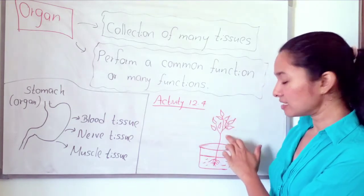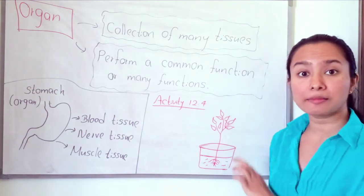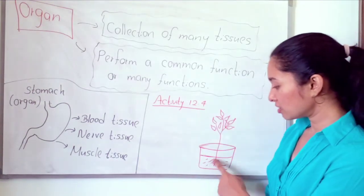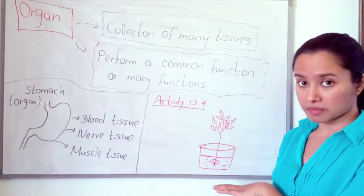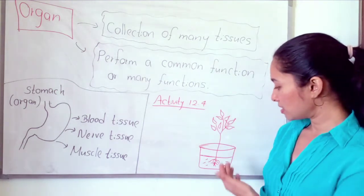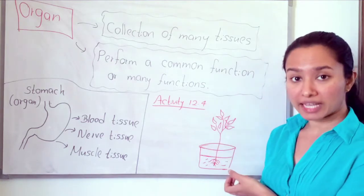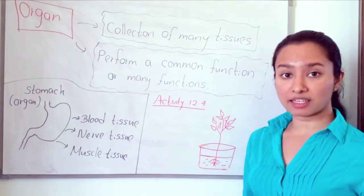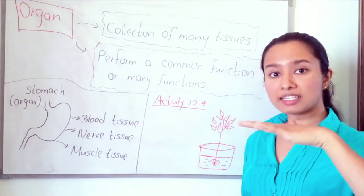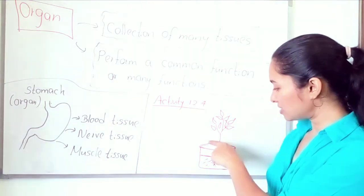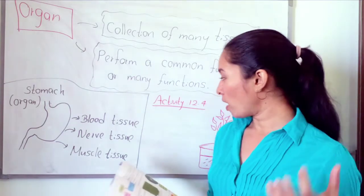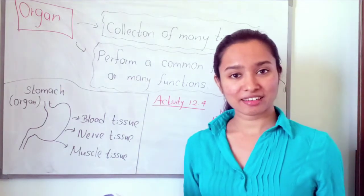Submerge a balsam plant — balsam means 'kudelu peria' — with the roots submerged in the water. After some time, the stem will turn red in color. Then take the plant, cut it, and take a cross-section of the stem to see what tissues are present.